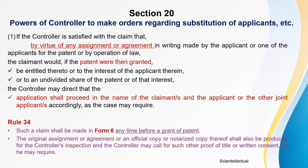The relevant rule is Rule 34. Such a claim should be made in Form 6 any time before the grant of the patent. The original assignment or agreement, or an official copy or notarized copy, shall be provided at the controller's office, and the controller may call for such other proof of title or written consent if required.